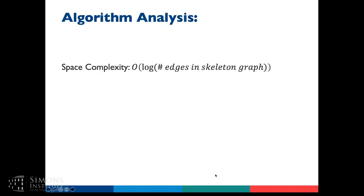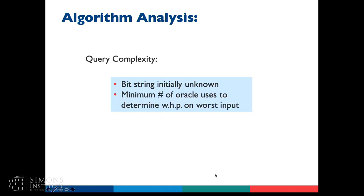First, the space complexity. The quantum algorithm only uses space logarithmic in the number of edges in the skeleton graph. Whenever you have something that scales logarithmically, it's not going to use a lot of qubits to solve this problem. Given that building large quantum computers is challenging, this is a good thing. The next thing we'll talk about is the query complexity.